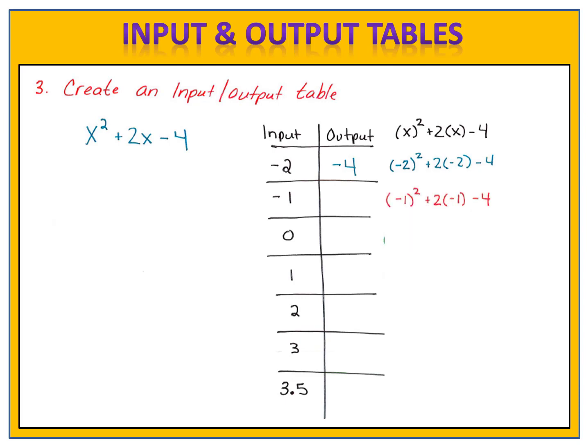Let's see how you did. When we input a negative 1, we get an output of negative 5. When we input a 0, we get an output of negative 4. When we input a 1, we get an output of negative 1. When we input a 2, we get an output of 4. When we input a 3, we get an output of 11. And when we input 3.5, we get an output of 15.25.